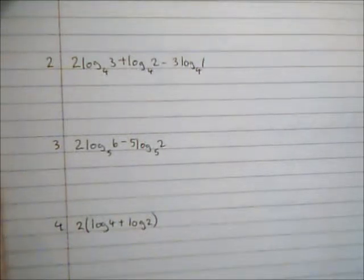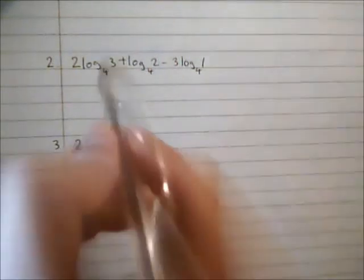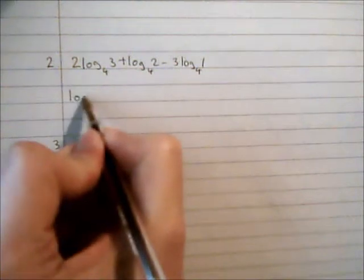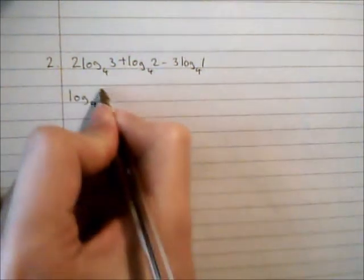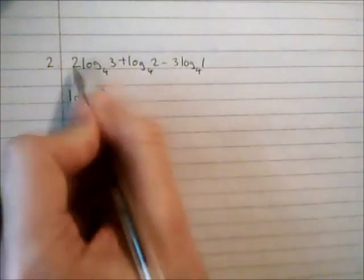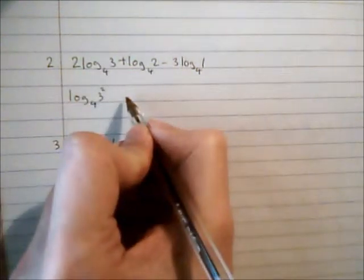So I have here 2log₄3 + log₄2 - 3log₄1. I'm going to rewrite this first so I have no multiples. I'm just going to bring the powers inside: log₄(3²) + log₄2 - log₄(1³).